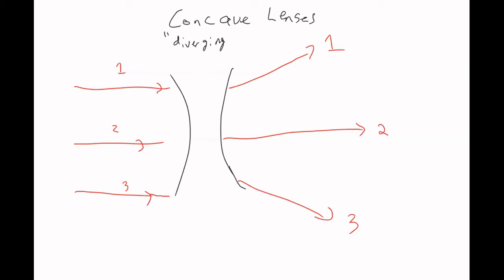If you remember what we did with mirrors with the ray tracing — so for the mirror, if the light bounced off it and you were looking at it, you could trace the ray on the other side of the mirror and you would be seeing some image. We can do the same thing with the lens, where if we take ray one and do the ray tracing, and then ray three as well.